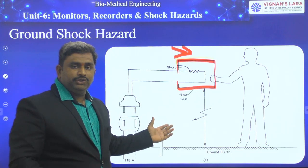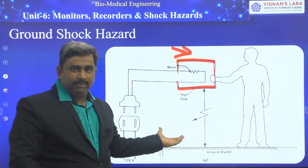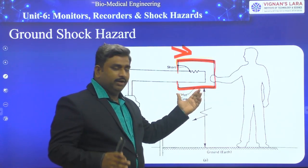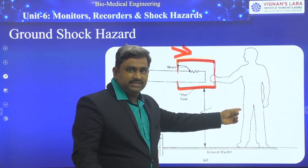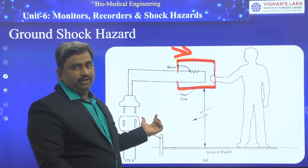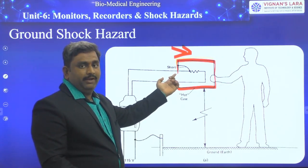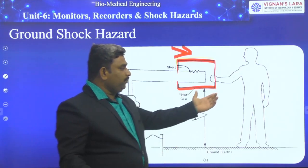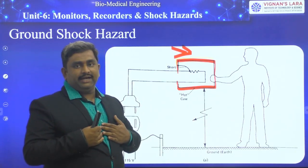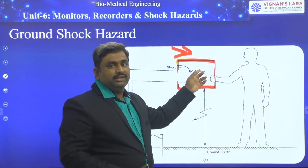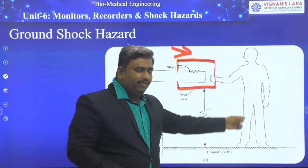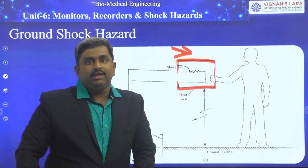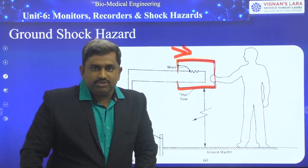When electricity is passing through the human body, if the resistance is very less compared to the neutral wire, the electrical leakage supply has to be grounded. But if there is no chance to ground properly, the human body acts as a conductor. When you are touching the electrical box, the electric current is grounding through the human body, and we are getting electrical shock. This type of electrical shock is called macroshock.